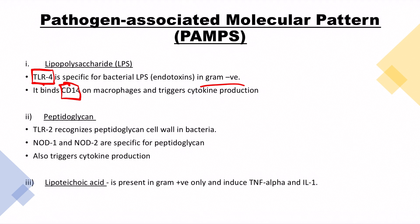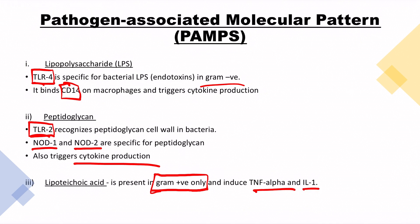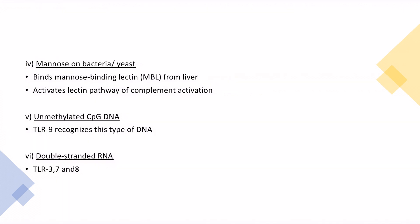Lipoteichoic acid is very high yield — remember it is present only in gram-positive bacteria, and it induces TNF-alpha and interleukin-1. Mannose on bacteria or yeast is a sugar molecule that binds mannose-binding lectin (MBL) from the liver and activates the lectin pathway of complement — not the classical pathway but the lectin pathway. Unmethylated CpG DNA is recognized by TLR9. Double-stranded RNA is recognized by TLR3 and TLR7.